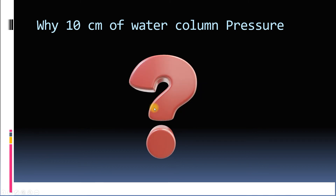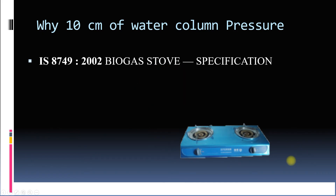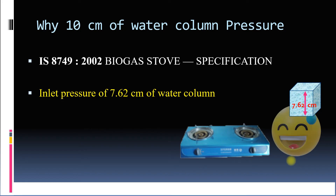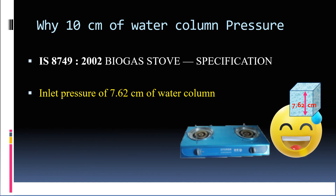The reason the pressure is 10 centimeters of water column and not 20, 30, or 5 is based on Indian Standard code IS 8749, which gives biogas stove specifications. This code states that an inlet pressure equivalent to 7.62 centimeters of water column is needed for a biogas stove. Therefore, 10 centimeters of water column pressure is used to account for pressure drop in the pipe and to ensure minimum pressure at the stove inlet.